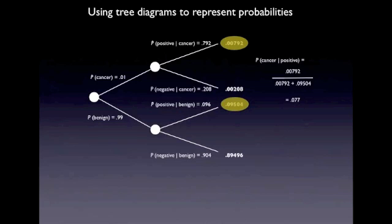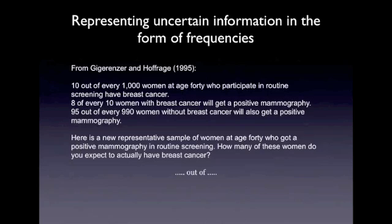Now, there is another way of thinking about the Bayesian calculation, shown in the example on the screen here. It's taken from a paper by Gigerenzer and Hoffrage, published in 1995. It's a paper worth reading. They give a theoretical rationale as to why people might find it easier to think about frequencies, which is what I'm talking about here. They've transformed this from a problem using probabilities into one using frequencies.